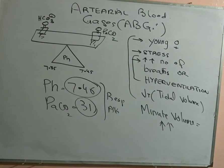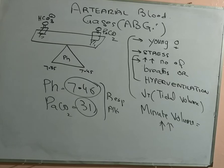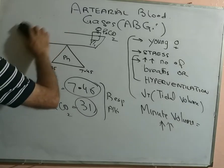If the primary problem is because of one limb of the seesaw, the other limb will try to compensate the change in pH by changing its behavior in relation to the kid that caused the problem. In cases of respiratory problems, the compensation will come from the bicarbonate side — which we call the metabolic limb.